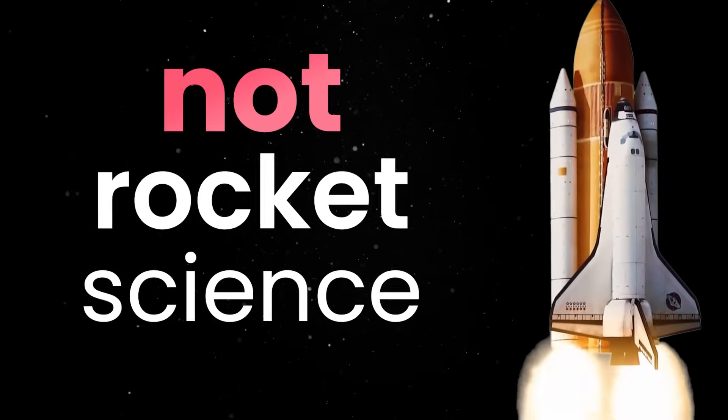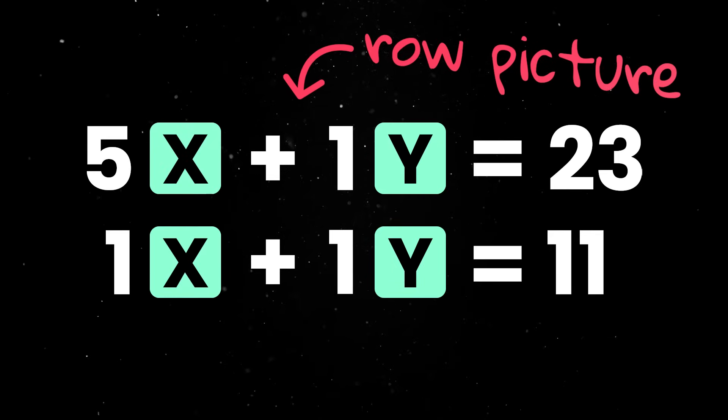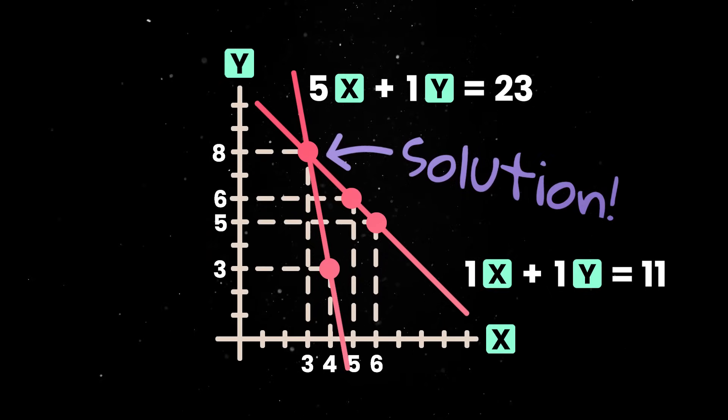Now, this is where things get interesting and you should pay attention. This is one of those moments when you stop paying attention in class for a second and then all of a sudden the teacher is talking in a different language and he jumps from counting coins to building rockets. What we've done so far is called a row picture where we are looking at each equation as a line and the point where those lines meet is our solution.